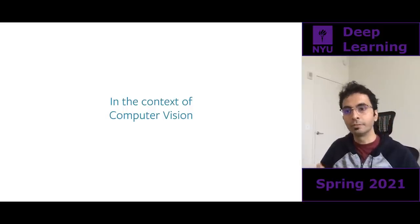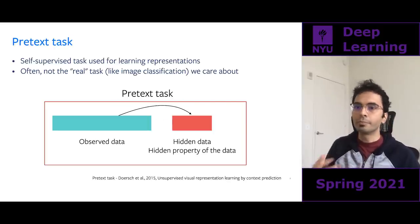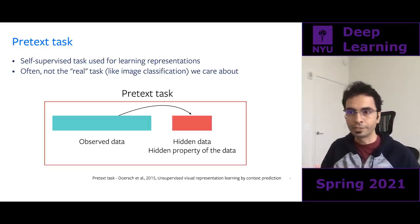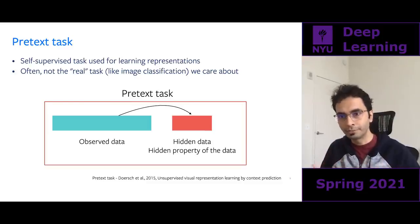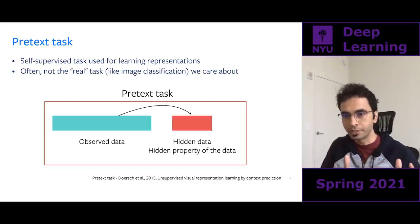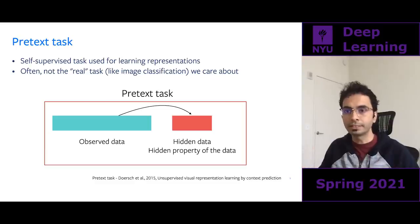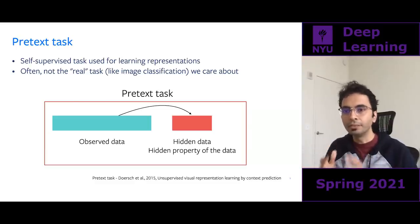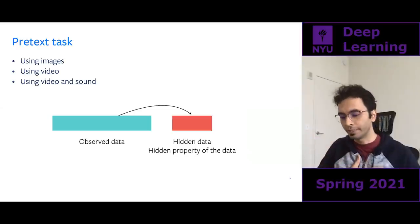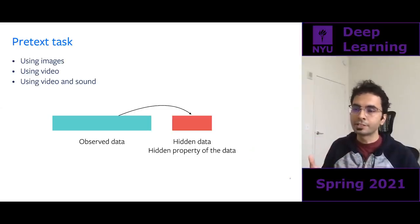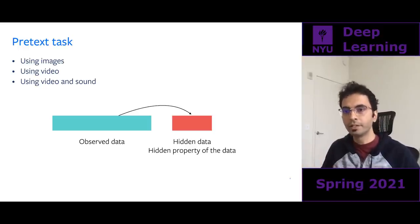A one-slide definition of self-supervised learning: you have observed data, you split it into two groups, you observe one part of the data and then try to predict some property about a hidden part from this observation. By setting up this prediction problem, you're able to learn fairly meaningful features. In computer vision, self-supervised learning started picking up a few years ago, with this concept of pretext tasks.